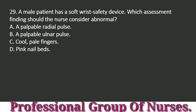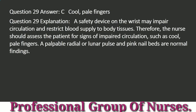Question 29: A male patient has a soft wrist safety device. Which assessment finding should the nurse consider abnormal? a. A palpable radial pulse. b. A palpable ulnar pulse. c. Cool, pale fingers. d. Pink nail beds. Answer: c. Cool, pale fingers. Explanation: A safety device on the wrist may impair circulation and restrict blood supply to body tissues. Therefore, the nurse should assess the patient for signs of impaired circulation, such as cool, pale fingers. A palpable radial or ulnar pulse and pink nail beds are normal findings.